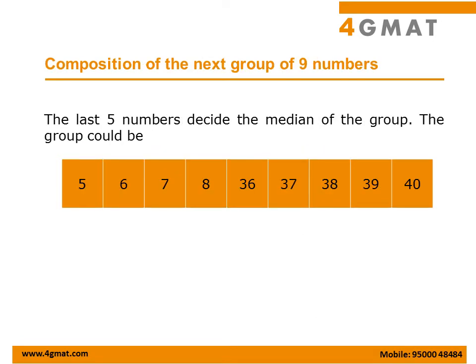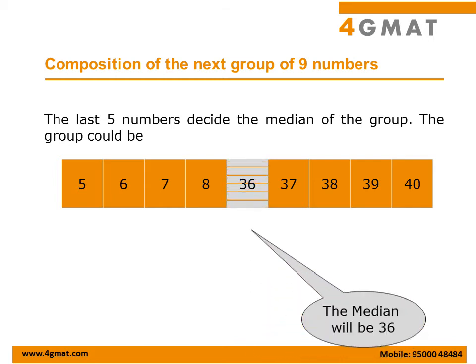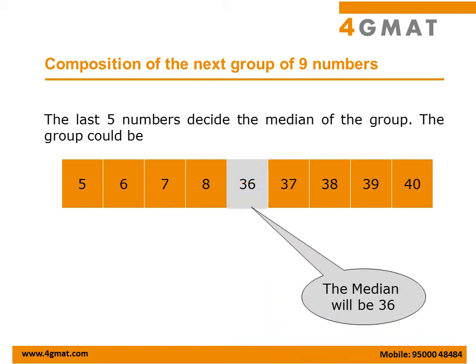Now let's look at the composition of the next group of 9 numbers. We pick the next 5 highest numbers, 36 to 40, and assign them as the last 5 numbers of the second group. For the first 4 numbers, we pick the smallest values still available: 5, 6, 7, and 8.